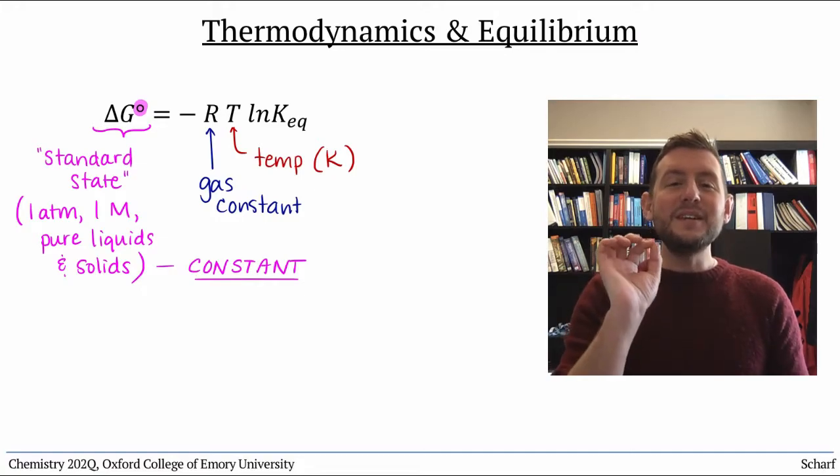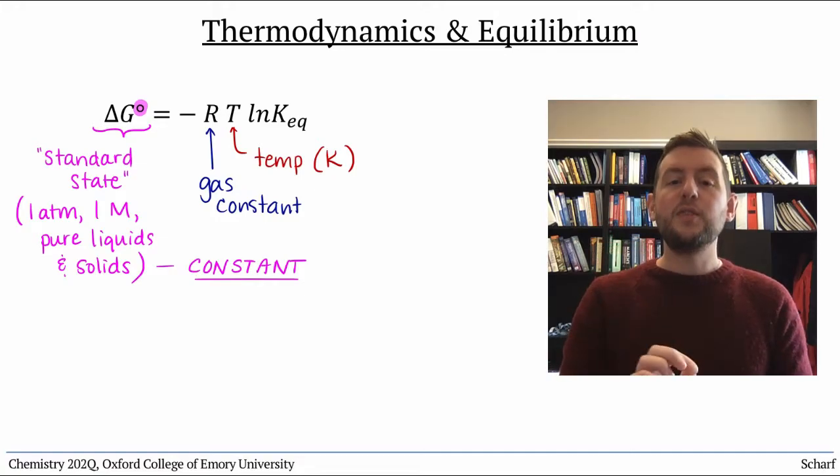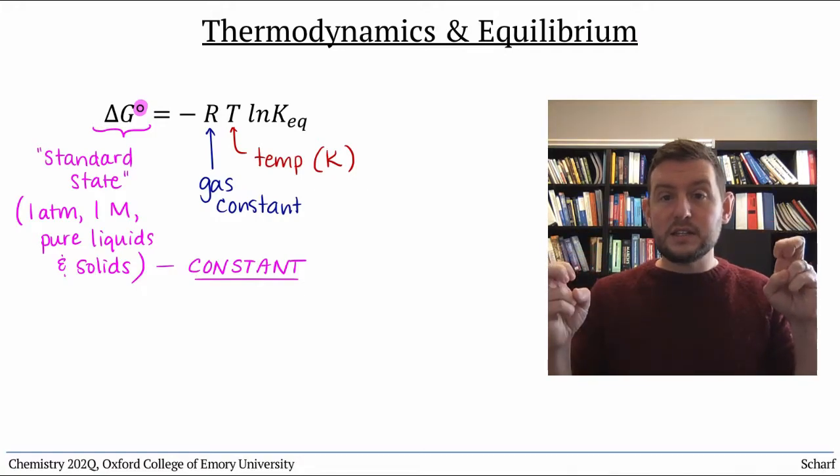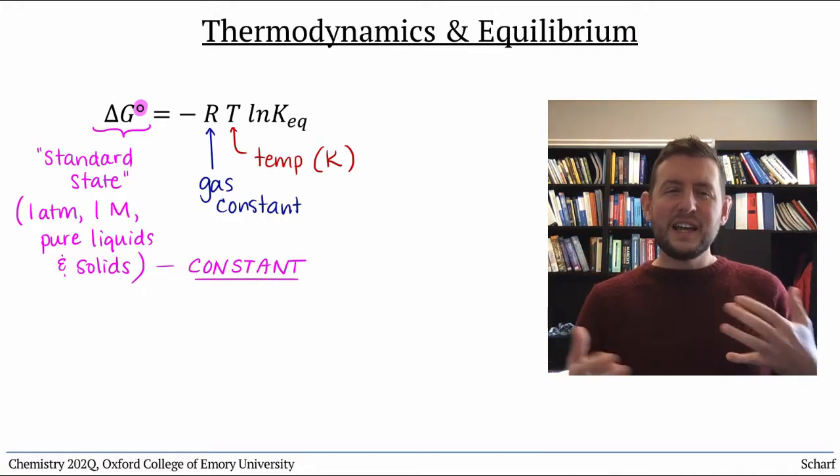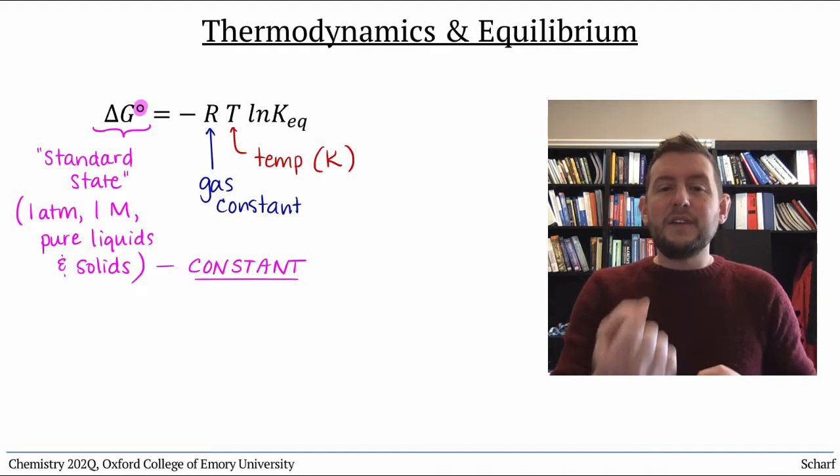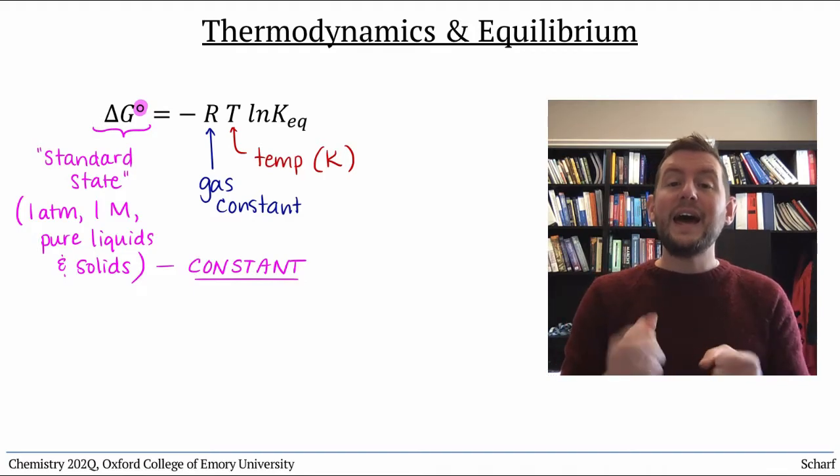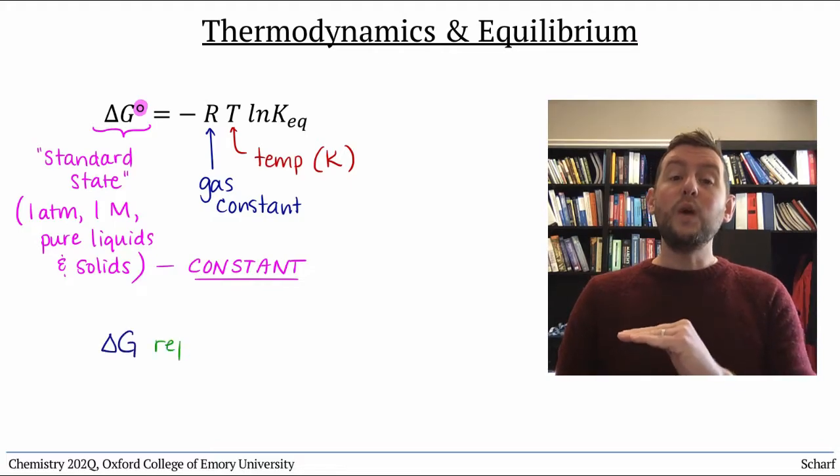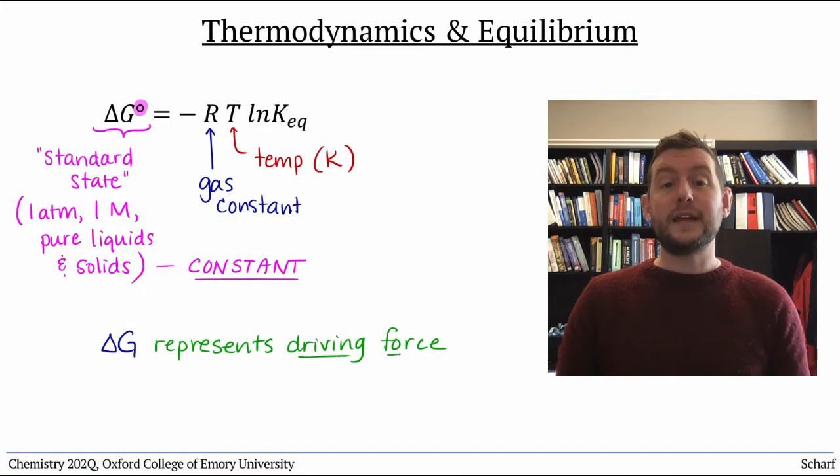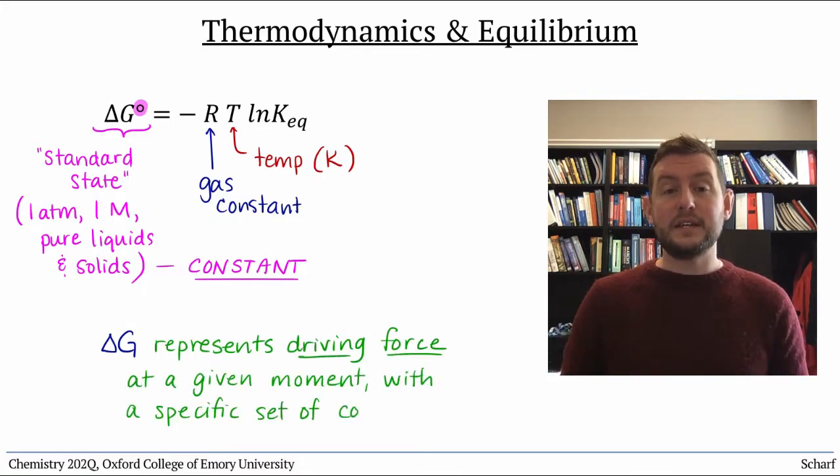But at a given instant, a reaction is not likely to be at standard conditions. So delta G naught doesn't really reflect the driving force of a reaction at a given moment. Instead, delta G without the naught reflects the driving force of a reaction under a specific set of conditions.